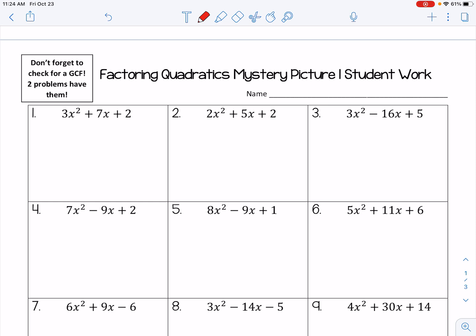The way that I like to factor when A is not 1 is I'm going to multiply my A value with my C value. My A value is 3, my C value is 2. So when I multiply those together, I get 6. Now my goal is to find factors of 6 that are going to add up to that B value. My B value is 7. So what are factors of 6 that add up to 7?